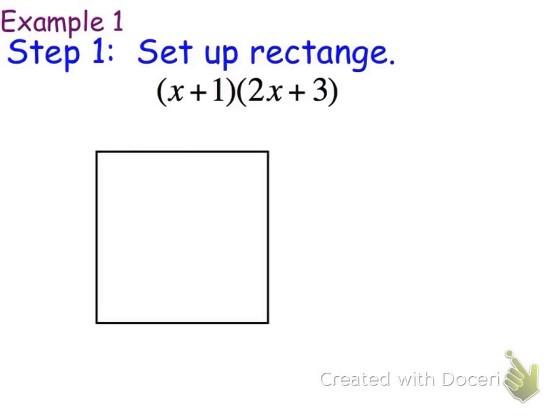The first step we're going to want to do is to set up our rectangle, our generic rectangle. Now remember, when you're multiplying things together, two sets of parentheses like this, two polynomials, what we're really doing is we're multiplying base times height.